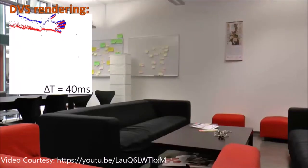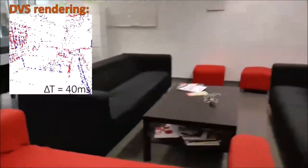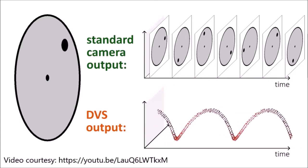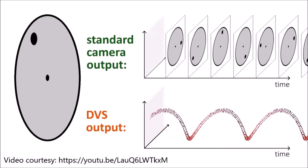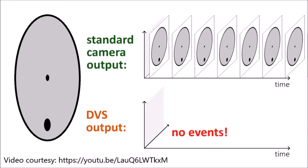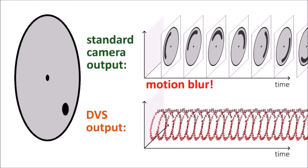Neuromorphic event-based cameras refer to a category of novel bio-inspired sensors which mimic the transient pathway of the human vision system, and consequently acquire visual information in a completely different way from traditional cameras, producing a stream of asynchronous per-pixel intensity changes instead of intensity frames at a fixed frame rate.